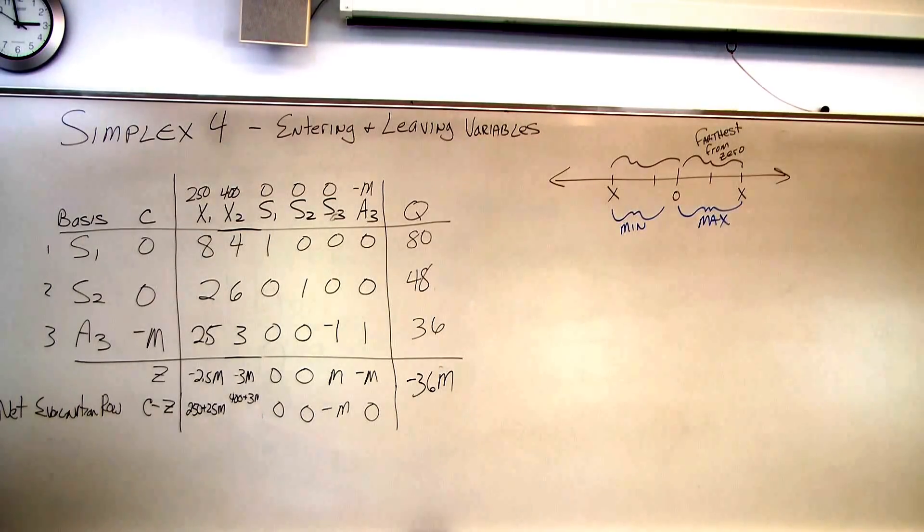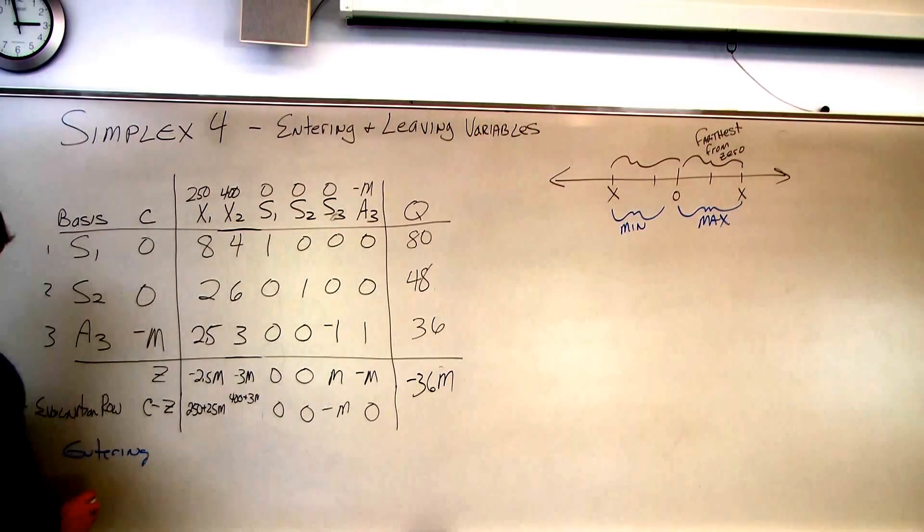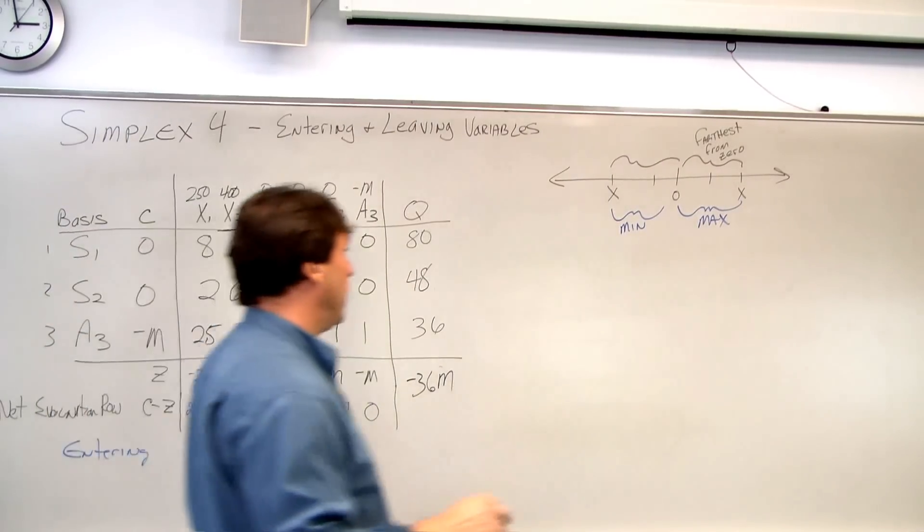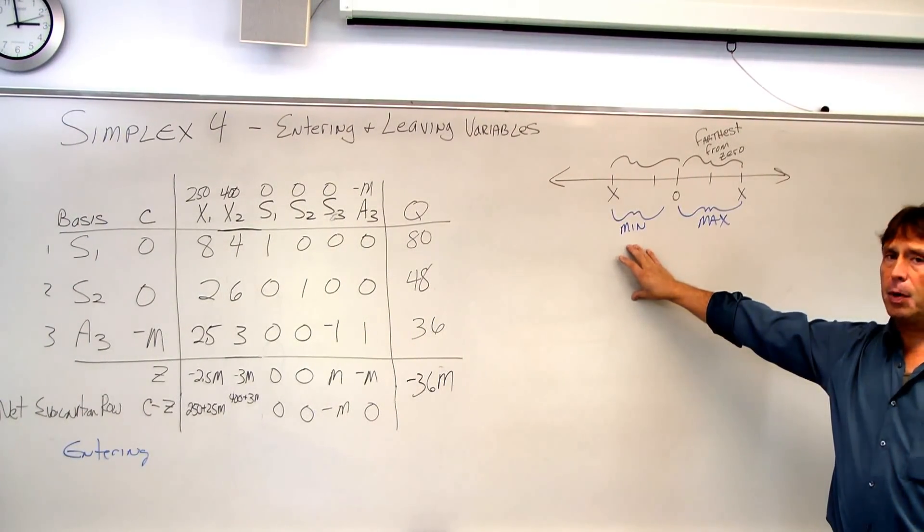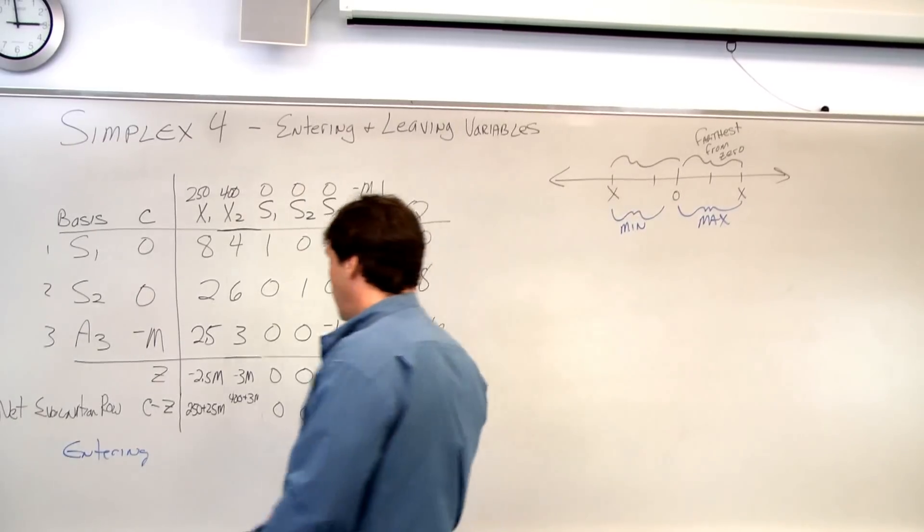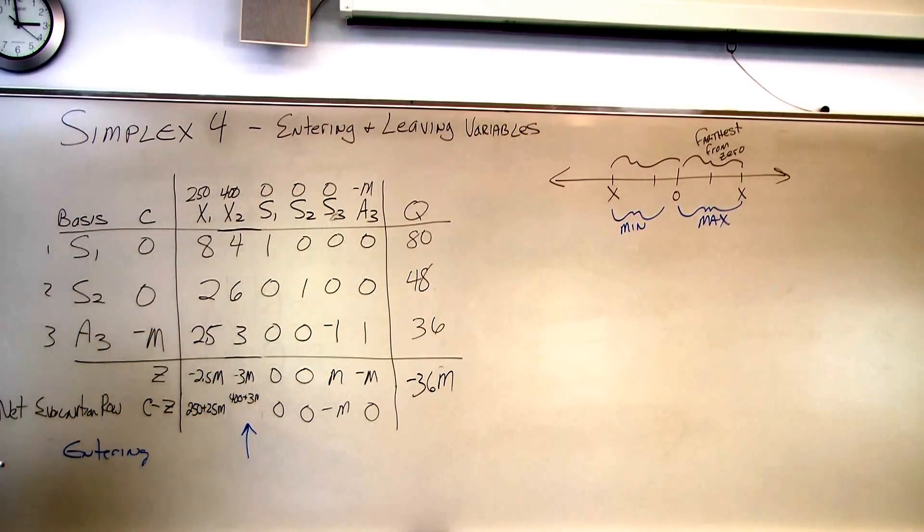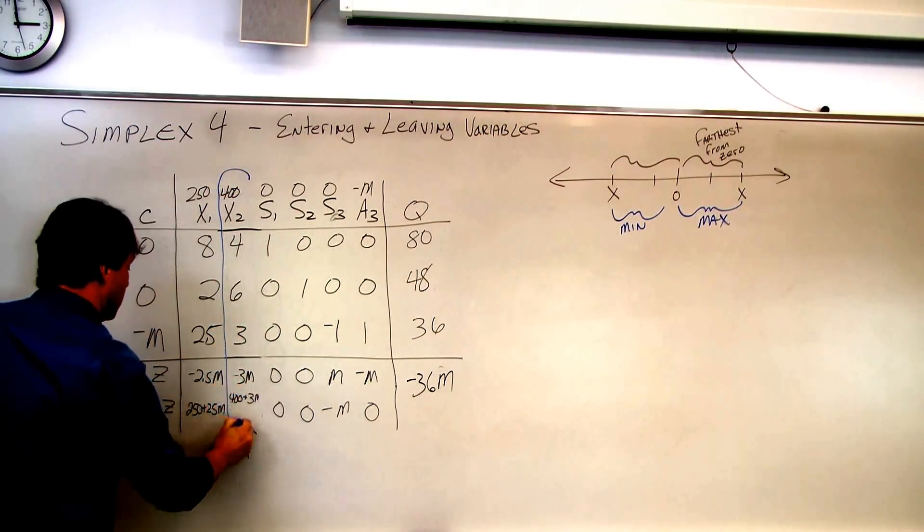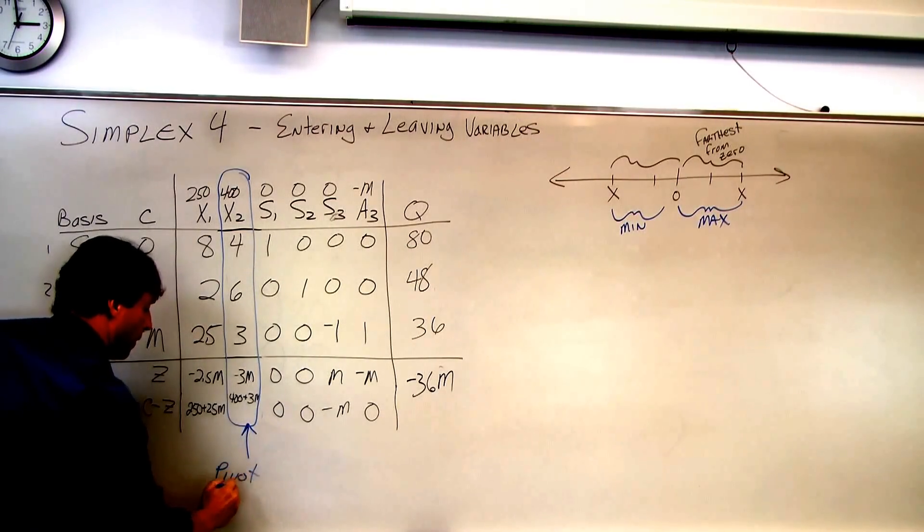So the first thing we want to do is identify the entering variable. Which variable do we want to put in the basis so we can make more profit? To do that, for a maximization problem, we identify the one that's the most positive. If we're doing a minimization problem, we do the one that's the most negative. For our example here, 400 plus 3m, m being a very large number, million, is our most negative. So this becomes our entering. It's also sometimes called the pivot column.